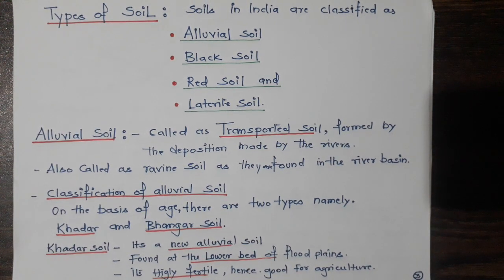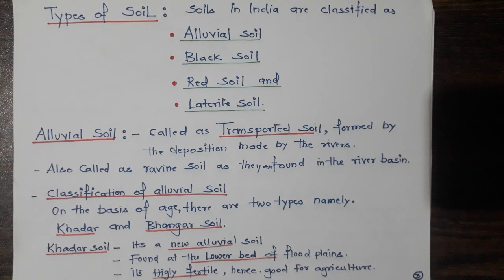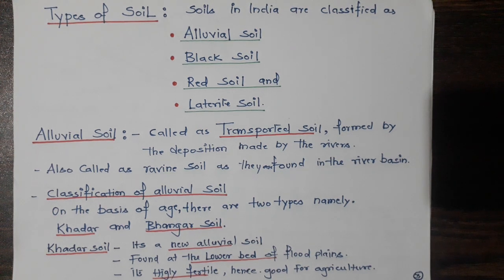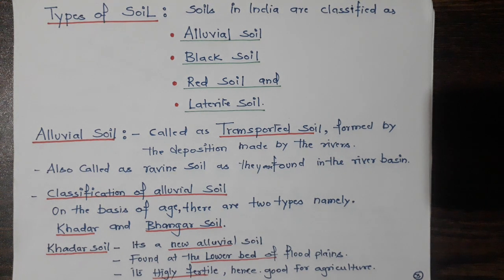India is an agricultural country and agriculture has become the main human occupation. Alluvial soil has contributed greatly to the growth of agriculture in India. Let us first take up alluvial soil.